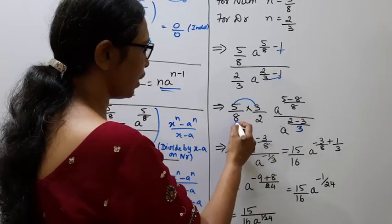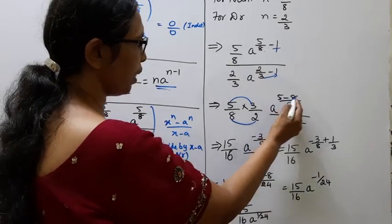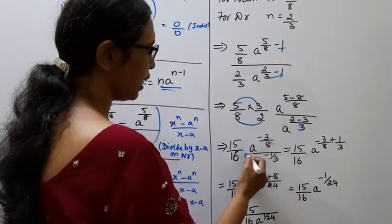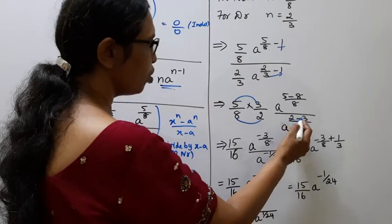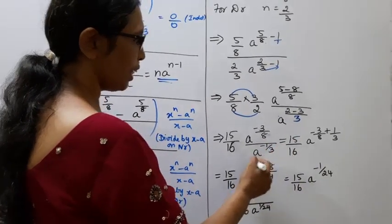Now, this is: 15 by 16 times a power (minus 3 by 8) divided by a power (minus 1 by 3). How to do it? When we have minus 3 by 8 minus minus 1 by 3.